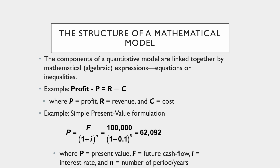The structure of a mathematical model — some of these should not be brand new to you. How do we calculate profit? Profit, usually designated as P, equals revenues minus cost or expense — R minus C, or R minus E depending on the book. It's how much you sell something for minus how much it costs to make or produce. An example might include an interest rate, where profit equals future money over interest rate times number of years, yielding something just over $62,000. Our assignment model won't include an interest rate — profit equals revenues minus expenses is exactly what a mathematical model is.